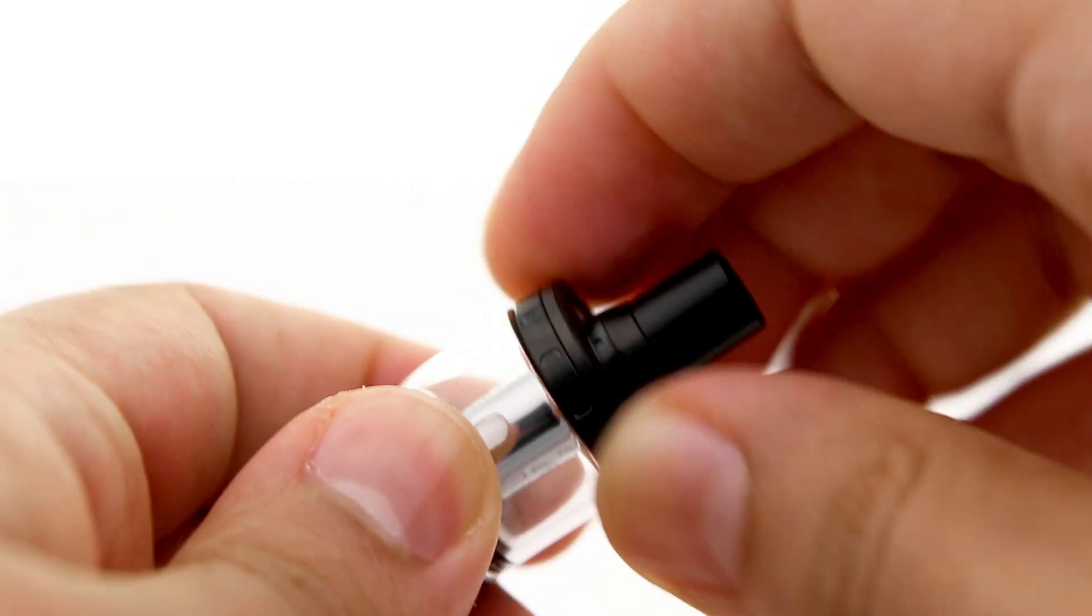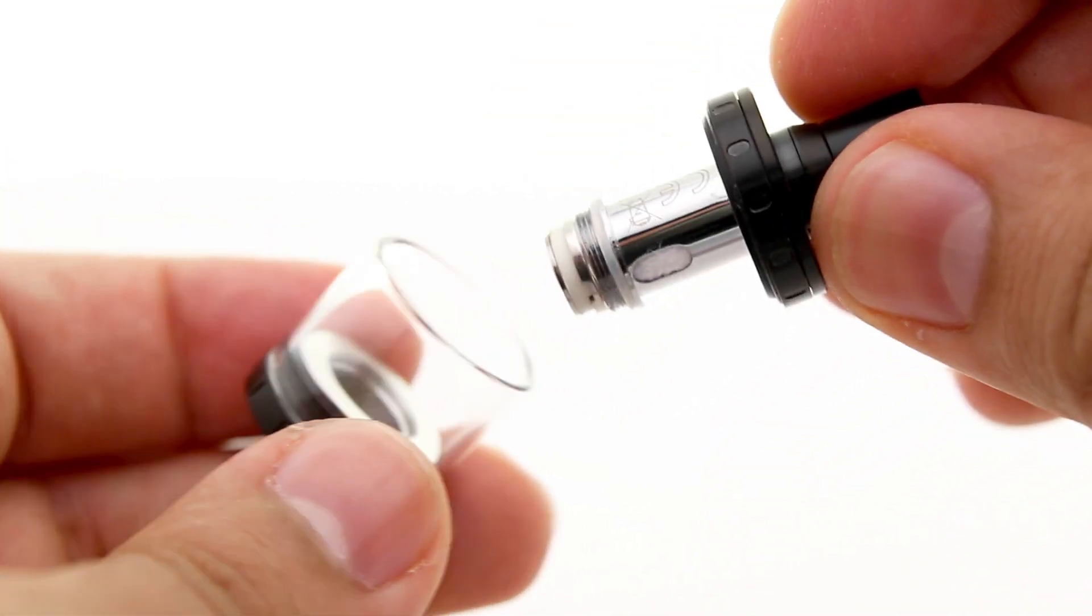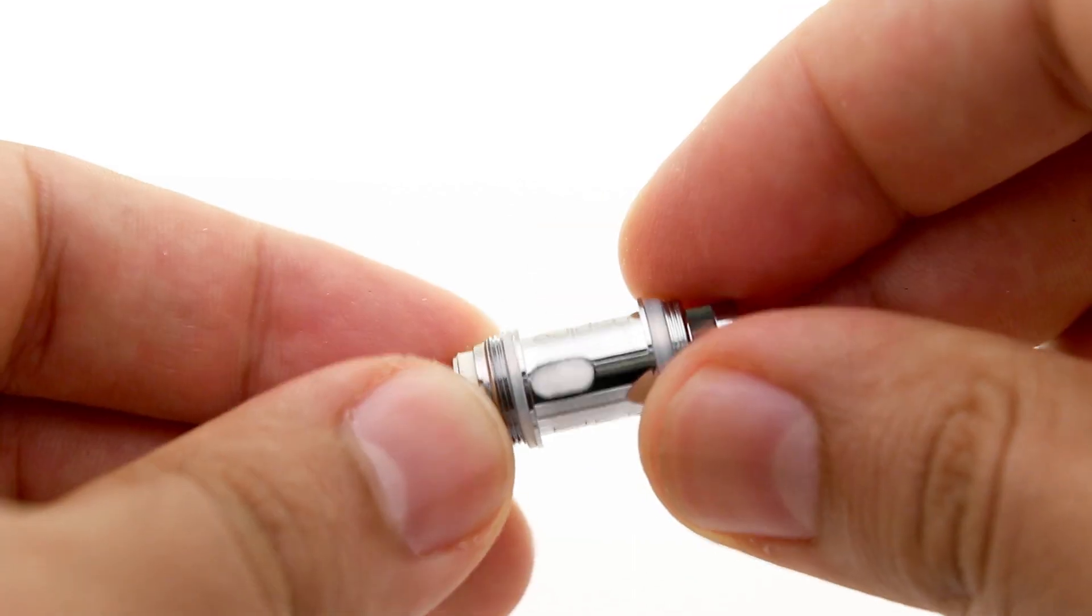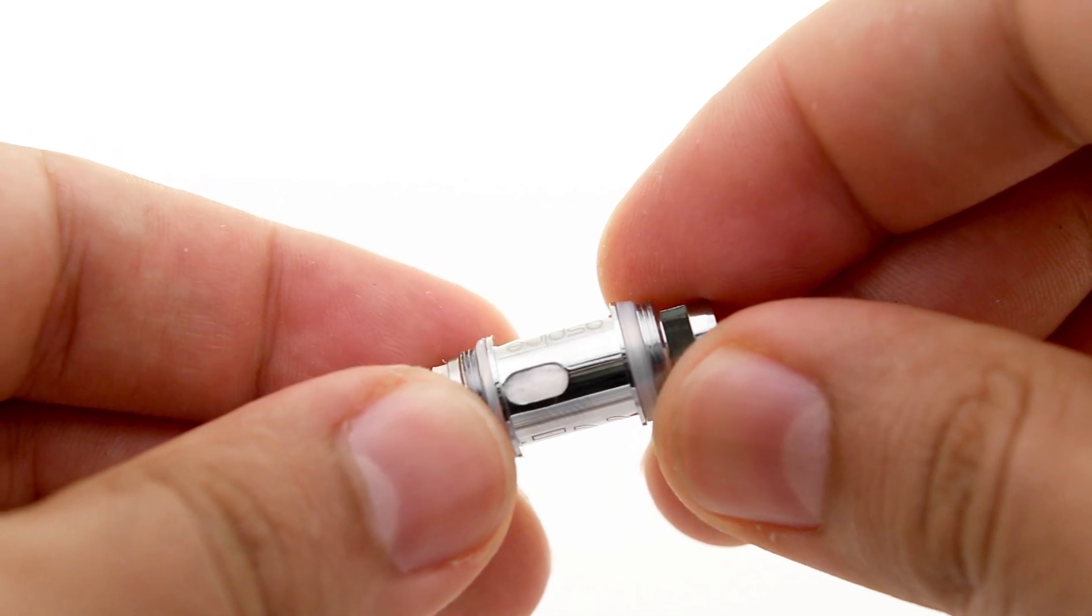The top piece has grooves, making it easy to get a good grip to twist it off from the rest of the tank. The coil screws into the deck and the top piece, holding the tank together. The coils are quite large, with two fairly large wicking slots to allow liquid into the coils.